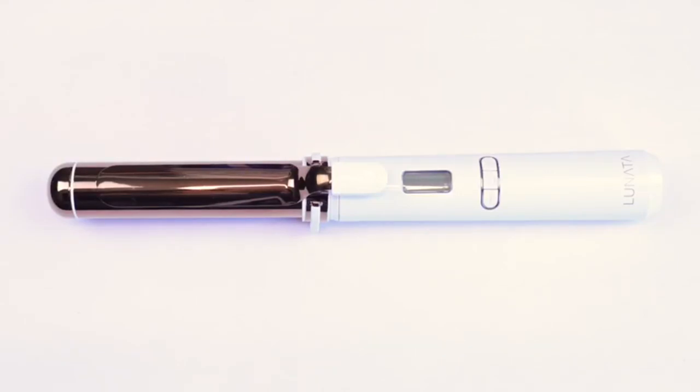There's a special way to turn on your Lunata cordless curling iron and wand. We do this so that it can't accidentally turn on while in transit. There is a bit of a learning curve, so I'm going to show you right now how to turn it on.